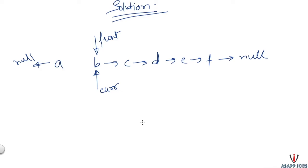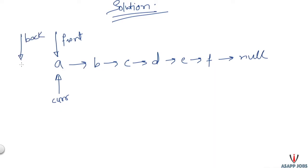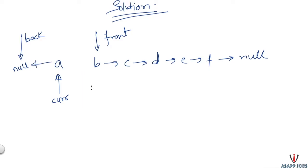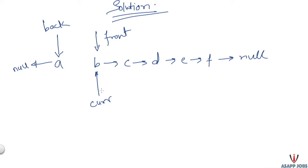We cannot reverse the linked list using two pointers - we need another pointer pointing to the previous node. Let's call this the 'back' pointer, initially assigned to null. Step one: shift the front pointer to the next element. Step two: point the current element's next to the back pointer - so A's next now points to null. Step three: before jumping current to the next element, assign back to current, then move current to front. Let's verify these three steps to confirm the list is being reversed.